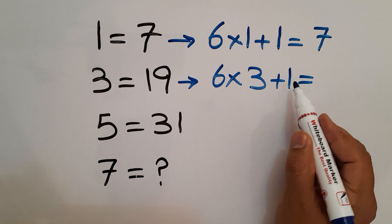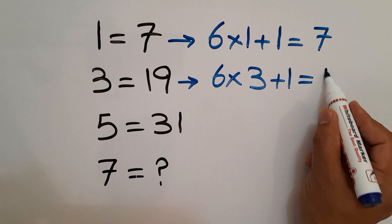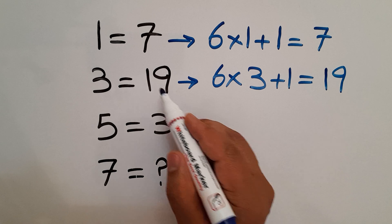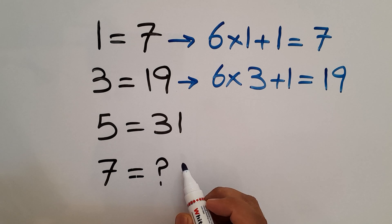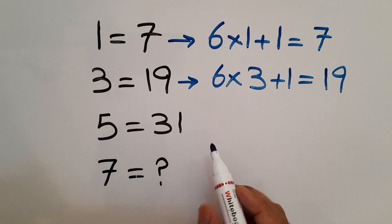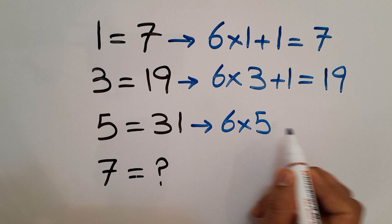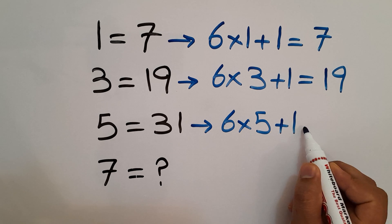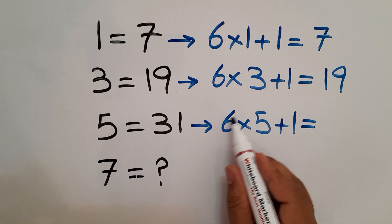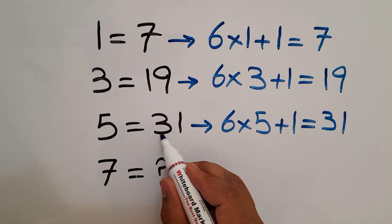In the third line we have 5 and 31. 6 times 5 then plus 1 gives us 30 plus 1, which equals 31, the right hand side number.